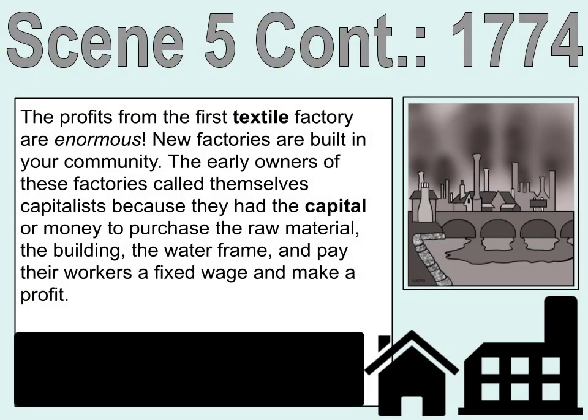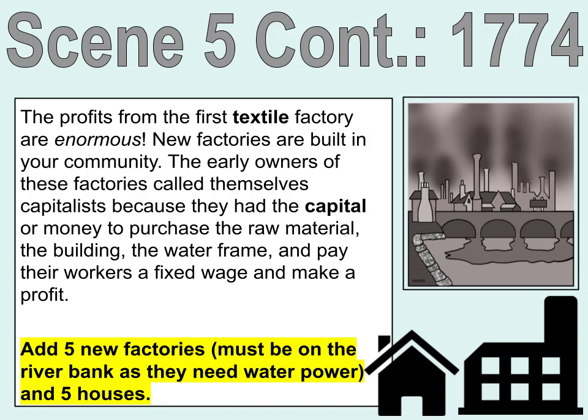The profits from the first textile factory are enormous. New factories are built in your community. The early owners of these factories called themselves capitalists because they had the capital — or money — to purchase the raw material, the building, the water frame, and pay their workers a fixed wage and make a profit. Add five new factories. These must be on the riverbank because they need water power.